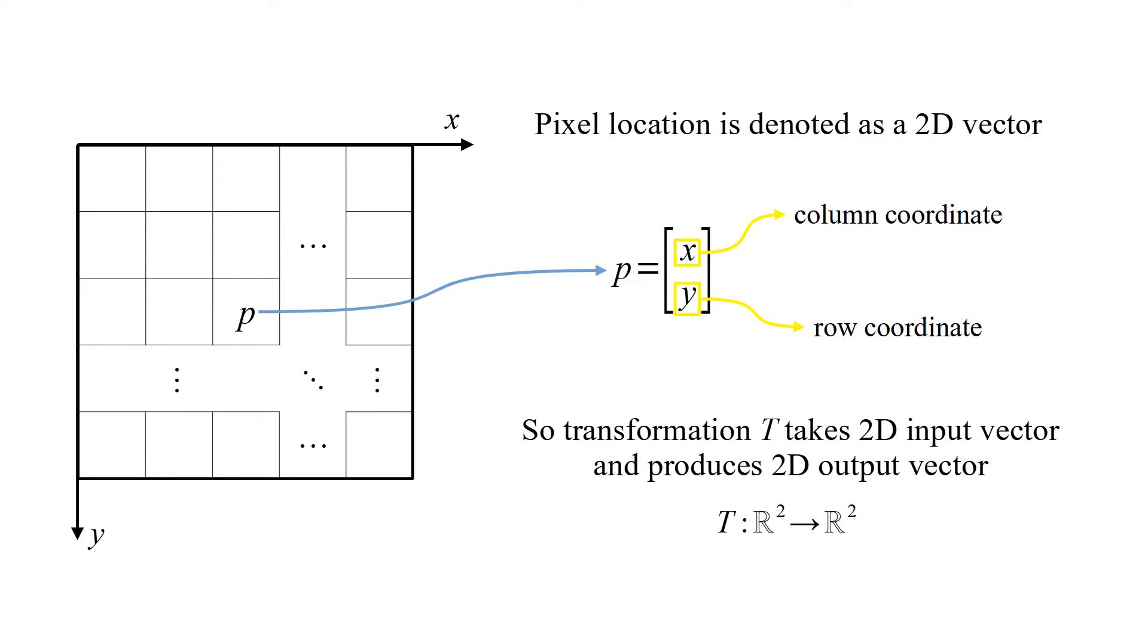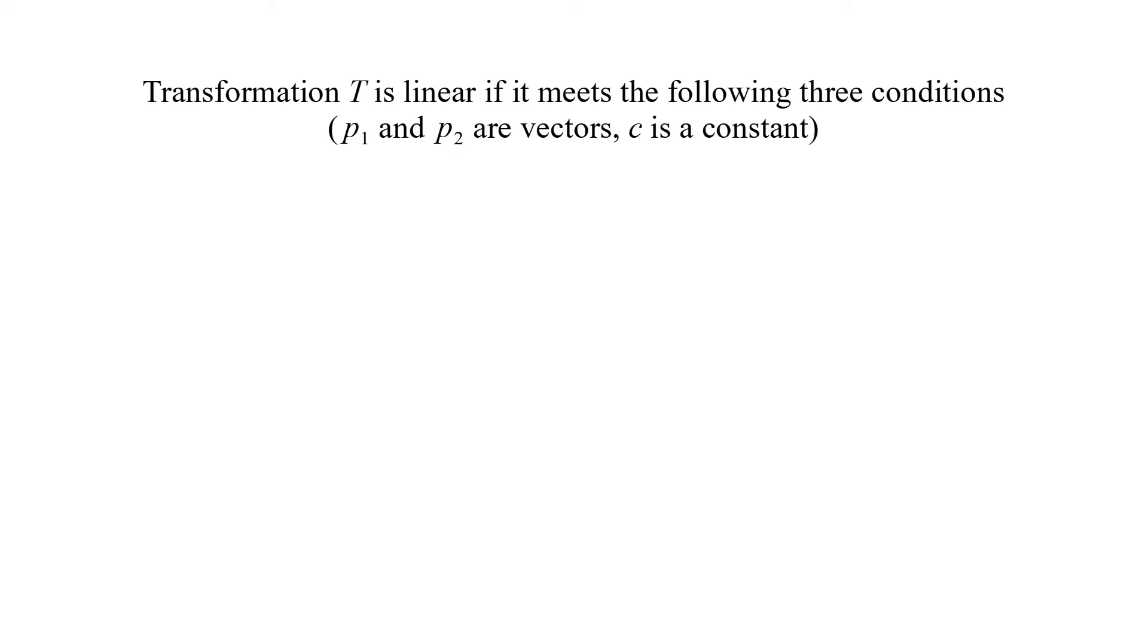So transformation T takes 2D input vector and produces 2D output vector. Transformation T is linear if it meets the following three conditions. Here, P1 and P2 are vectors, C is a constant.